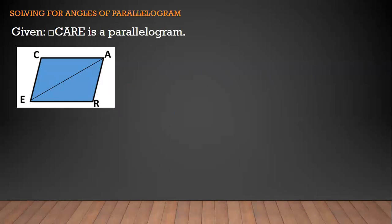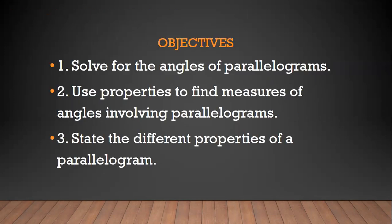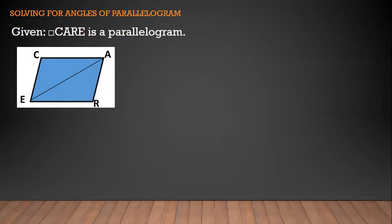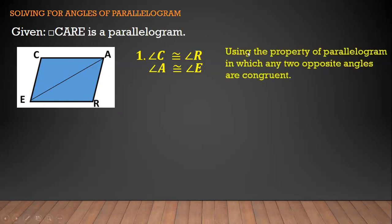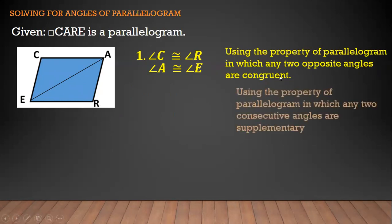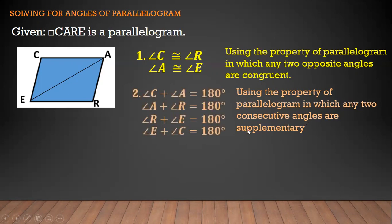Let's state first the properties of a parallelogram. First, we have angle C and angle R are congruent, and angle A and angle E are congruent. So any two opposite angles are congruent in a parallelogram. Next is the property that any two consecutive angles are supplementary.